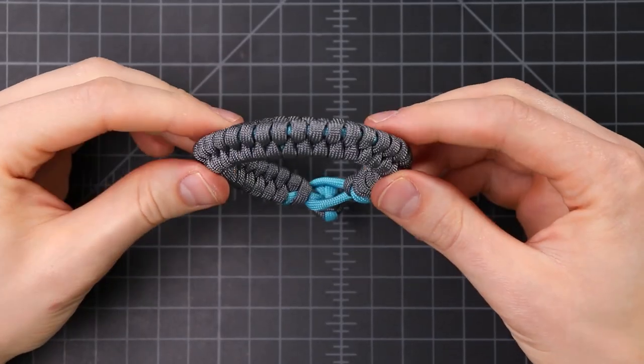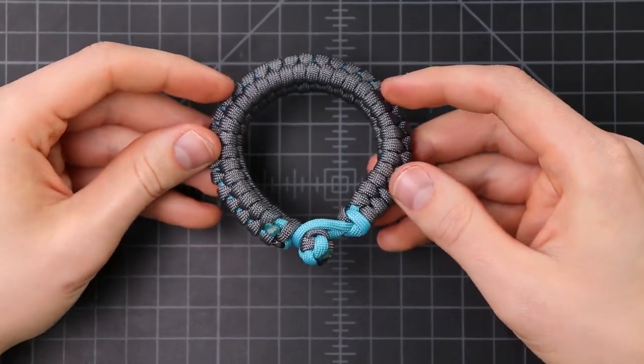Hey guys, today we're going to be showing you how to make the rattlesnake bracelet. This knot is actually covered in Ashley's Book of Knots, so it's been around for a while.